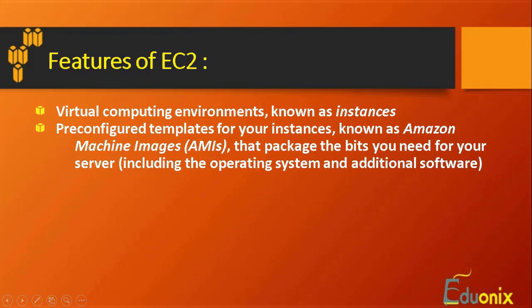EC2 also has pre-configured templates. For example, if you want to work on Linux but don't have a DVD to install it, you can directly use pre-defined templates called AMI - Amazon Machine Images. These are pre-installed applications or operating systems available on Amazon, packaging the bits needed for your server including the operating system and additional software. You can create a snapshot of it to use as a dedicated server.